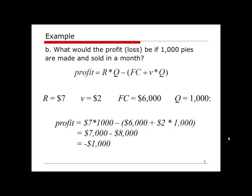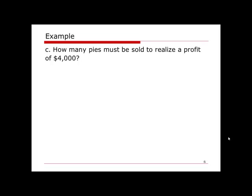Part c: how many pies must be sold to realize a profit of four thousand dollars? Here we have an expected profit we want to achieve, and we need to find the quantity required to achieve it. We use the same profit equation, but now profit is a known value of four thousand and quantity is the unknown.